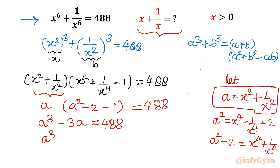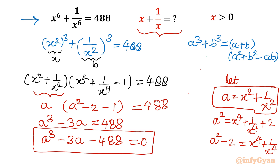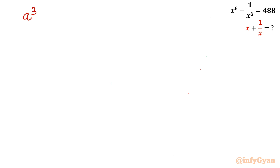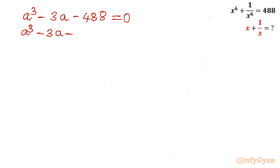Rearranging, we get the cubic equation: a³ − 3a − 488 = 0. We now need to solve this cubic. I will use an algebraic trick: 488 can be split as 512 − 24, and notice that 3a provides the clue — any number cubed and 3 times that number fits the pattern.